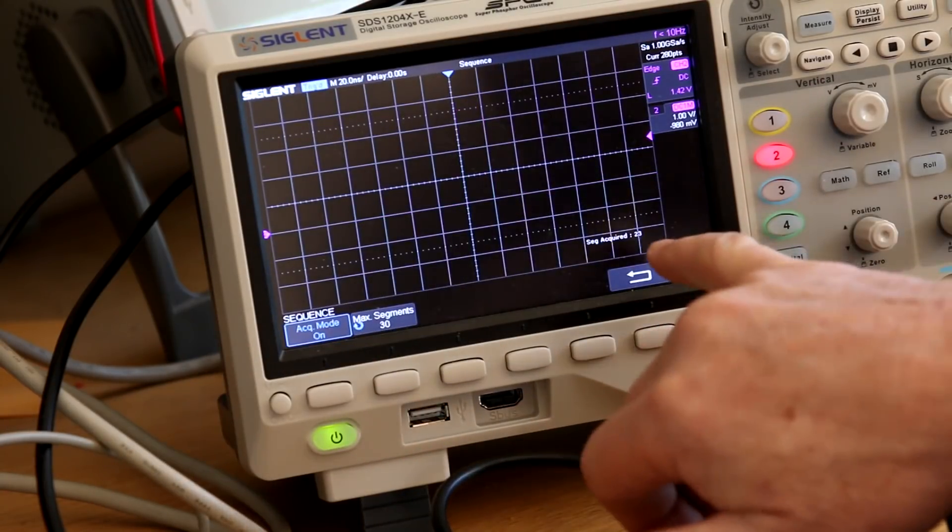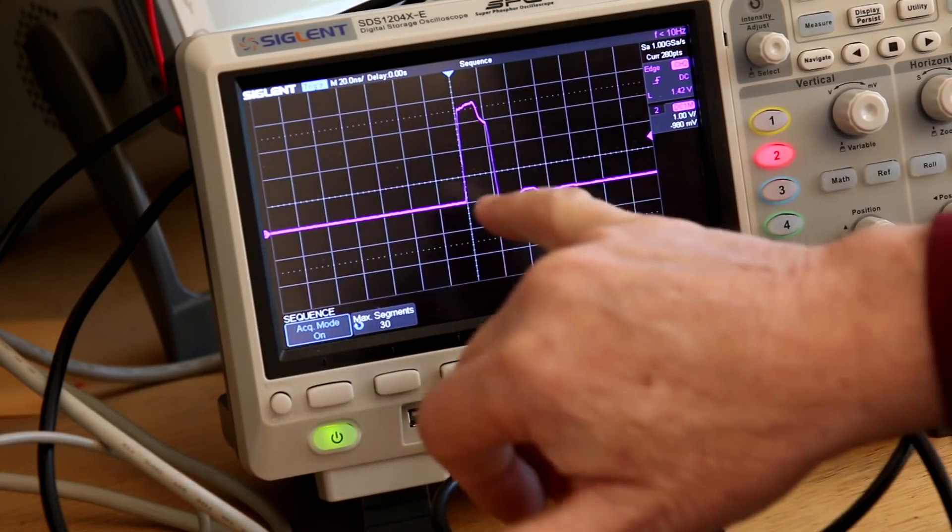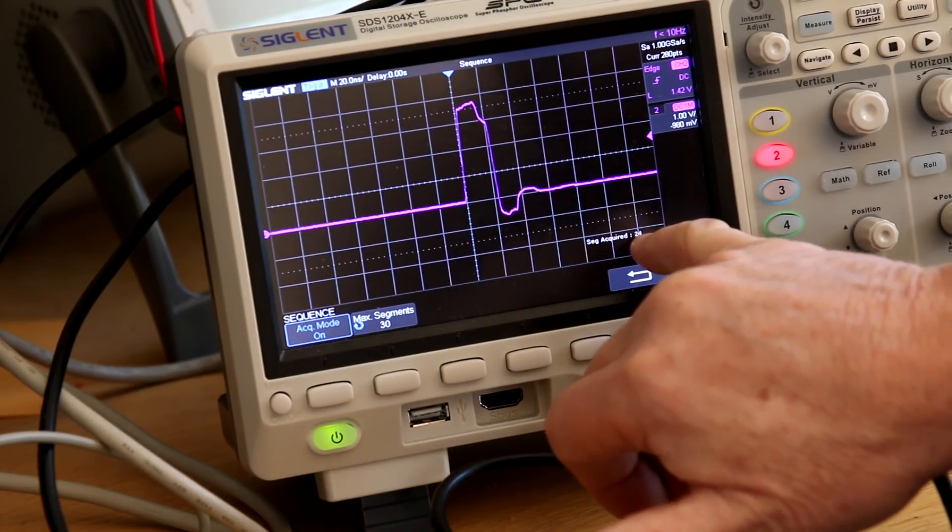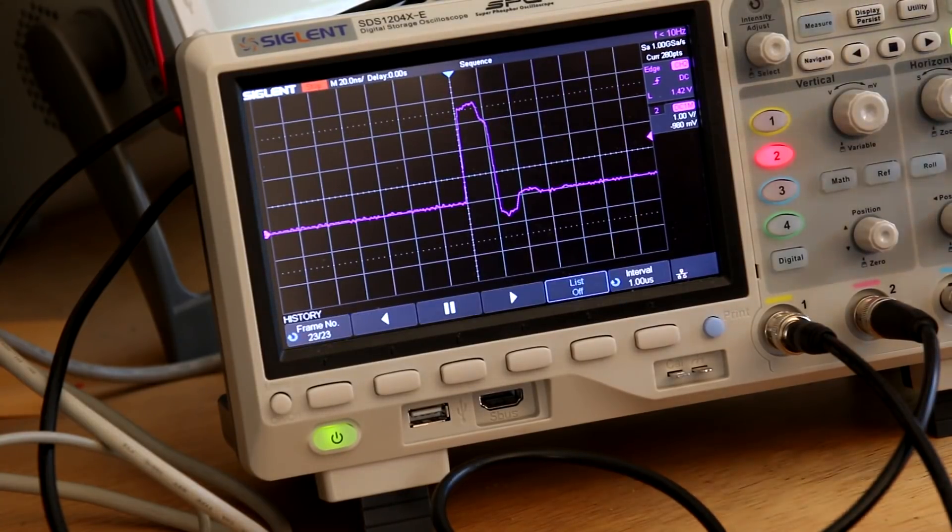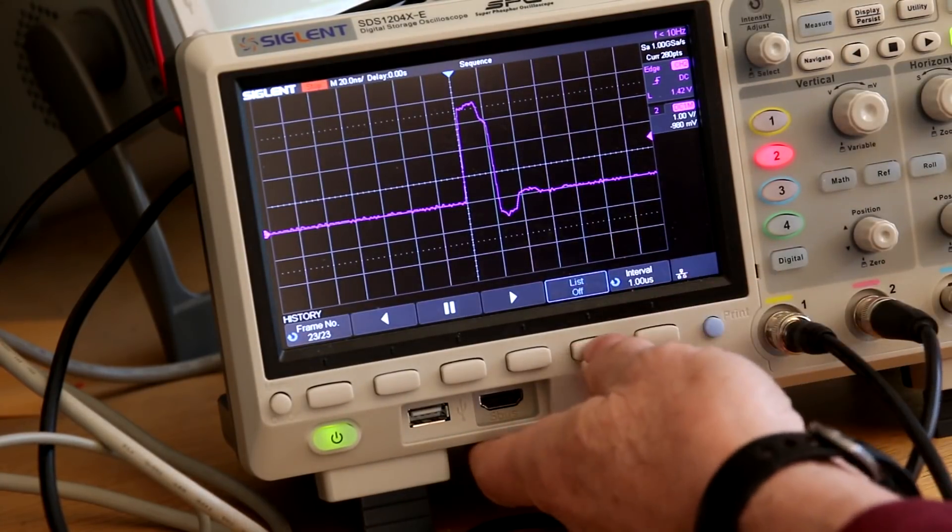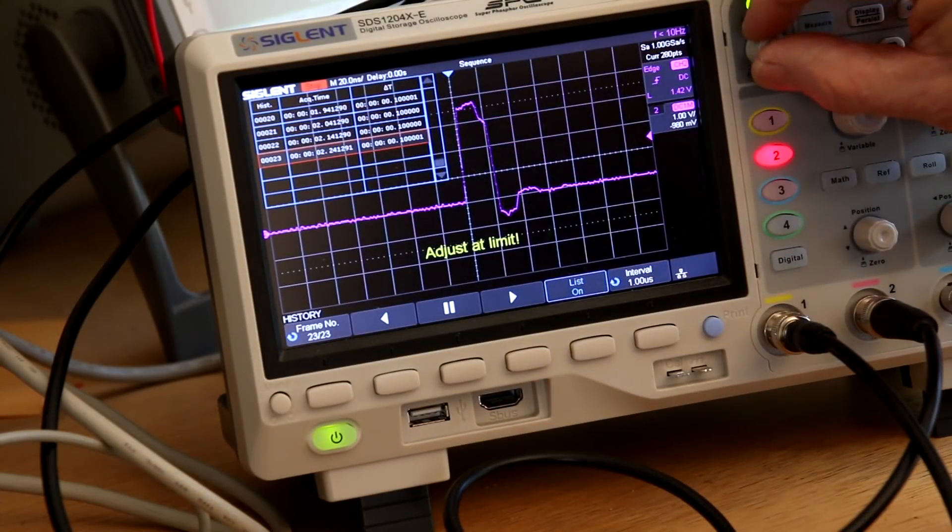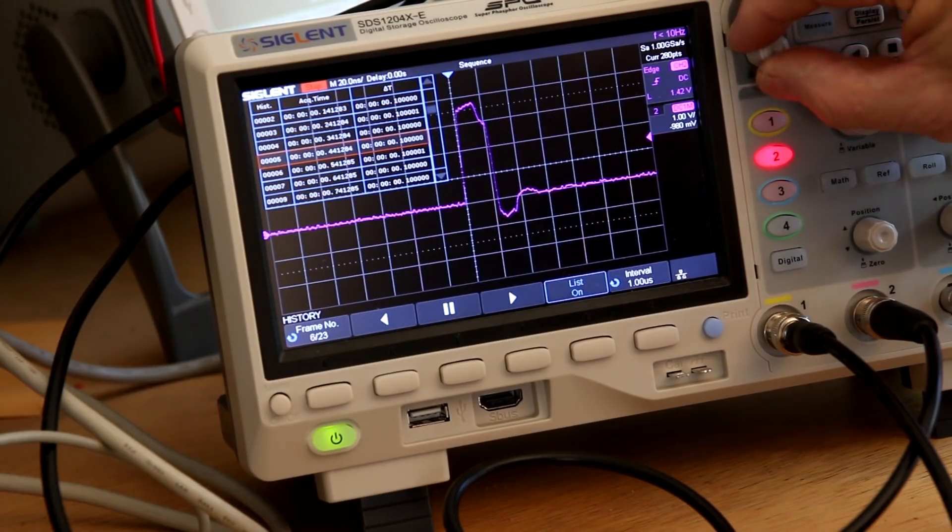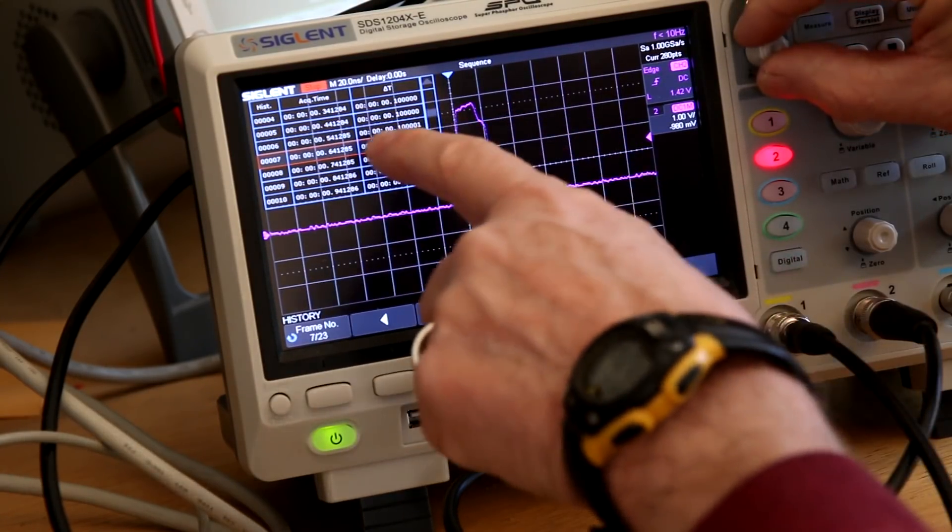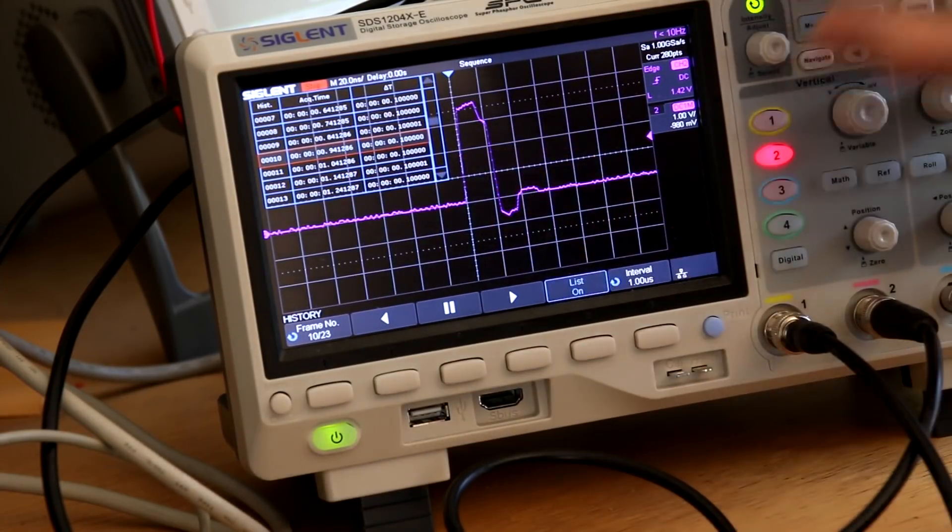And now what's happening is it's acquiring this pulse into 30 different chunks of memory. And if I stop it, stop the acquisition, I can press the history button and turn on what's called a list. And here you can see all the different acquisitions, characteristics of each of the acquisitions that I'm scrolling through with the universal button. And as I scroll through each of these chunks, you can see a different one of those acquired chunks is displayed.